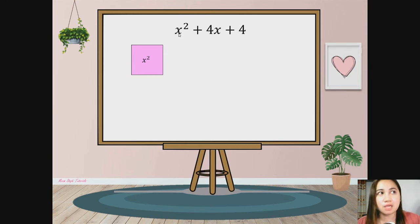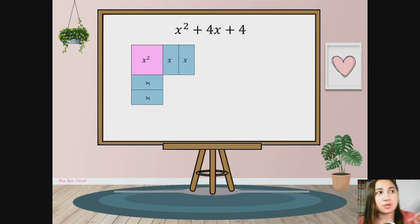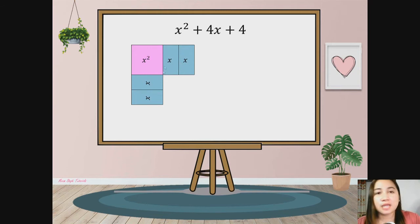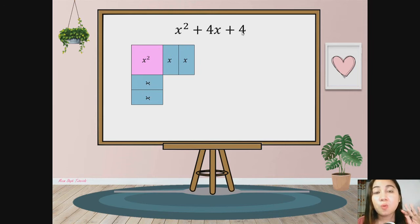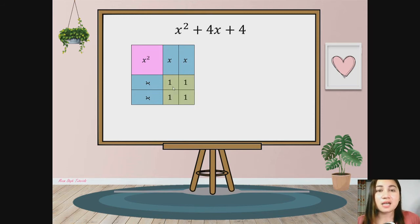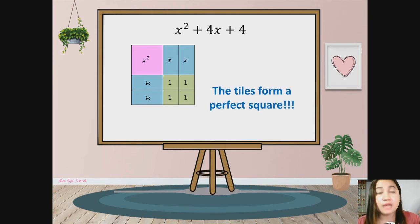This represents the x-square term here. And then we have 4x, so that means 4 x-tiles arranged in this manner. Just divide 4 by 2, so each side will have 2 tiles. And then 4 represents 4 one-tiles arranged this way. As I arrange the algebra tiles, the tiles form a perfect square. And only perfect square trinomials form this way using algebra tiles — that's why perfect square trinomials are called perfect squares.